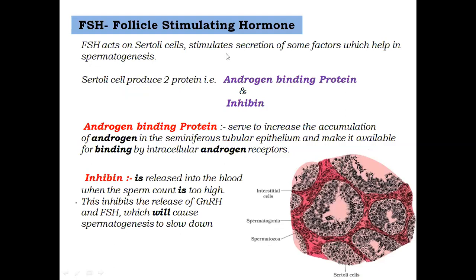Now we know about Follicle Stimulating Hormone. FSH acts on the Sertoli cells. We have Sertoli cells inside the seminiferous tubules. The Sertoli cells provide nourishment and help with spermatogenesis.